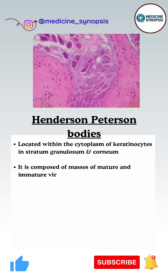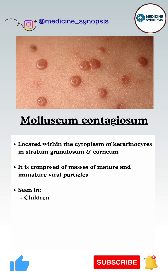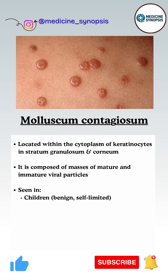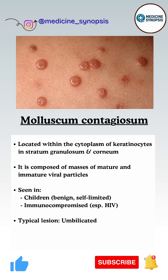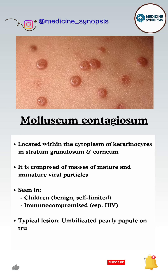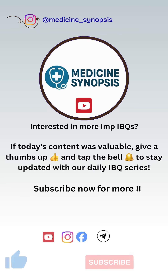This infection in children is usually benign and self-limited, whereas in the immunocompromised — especially HIV — it results in widespread lesions. The typical lesion seen in molluscum contagiosum is the umbilicated pearly papules, which are commonly seen on the trunk, face, or genitals.